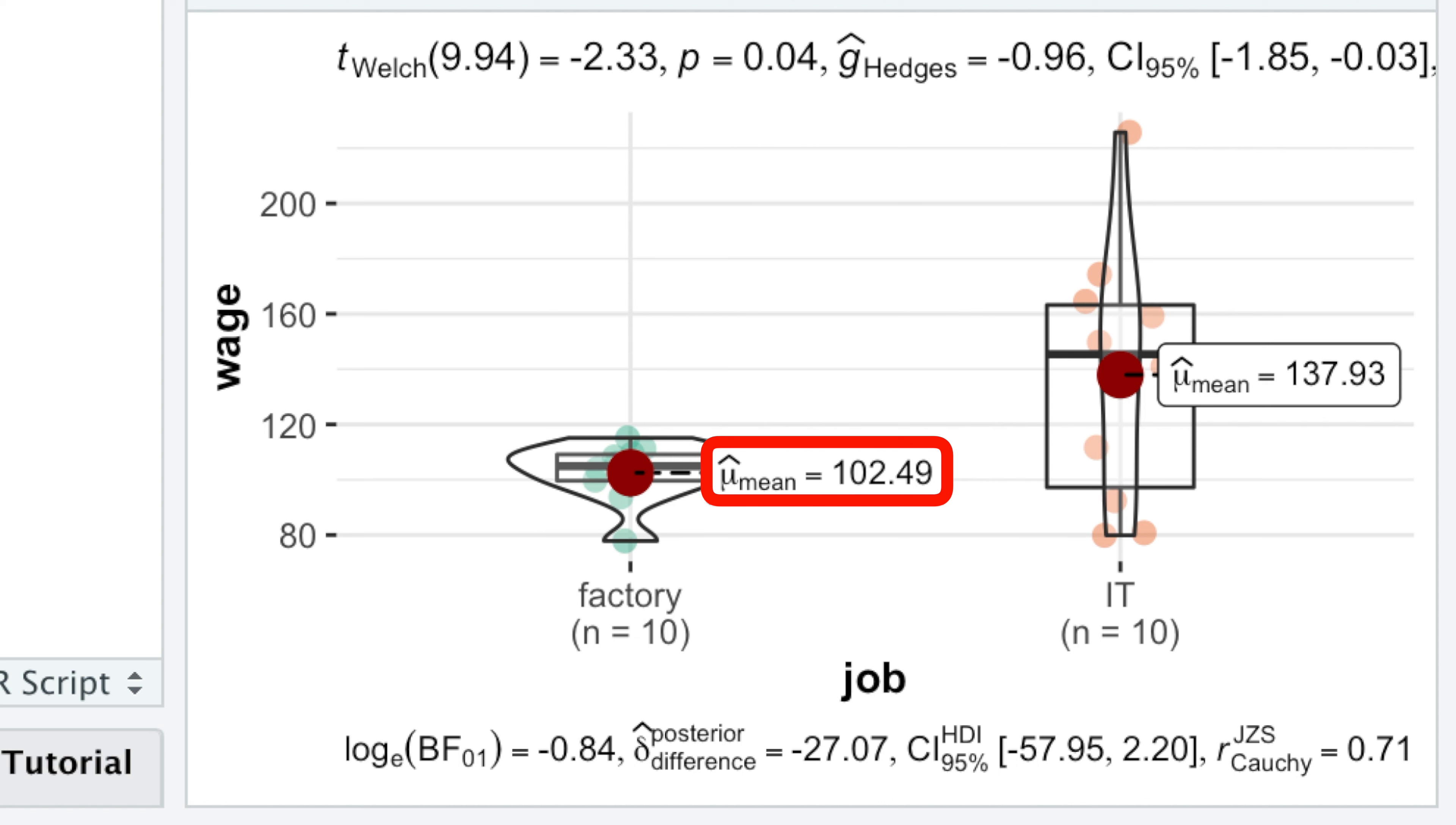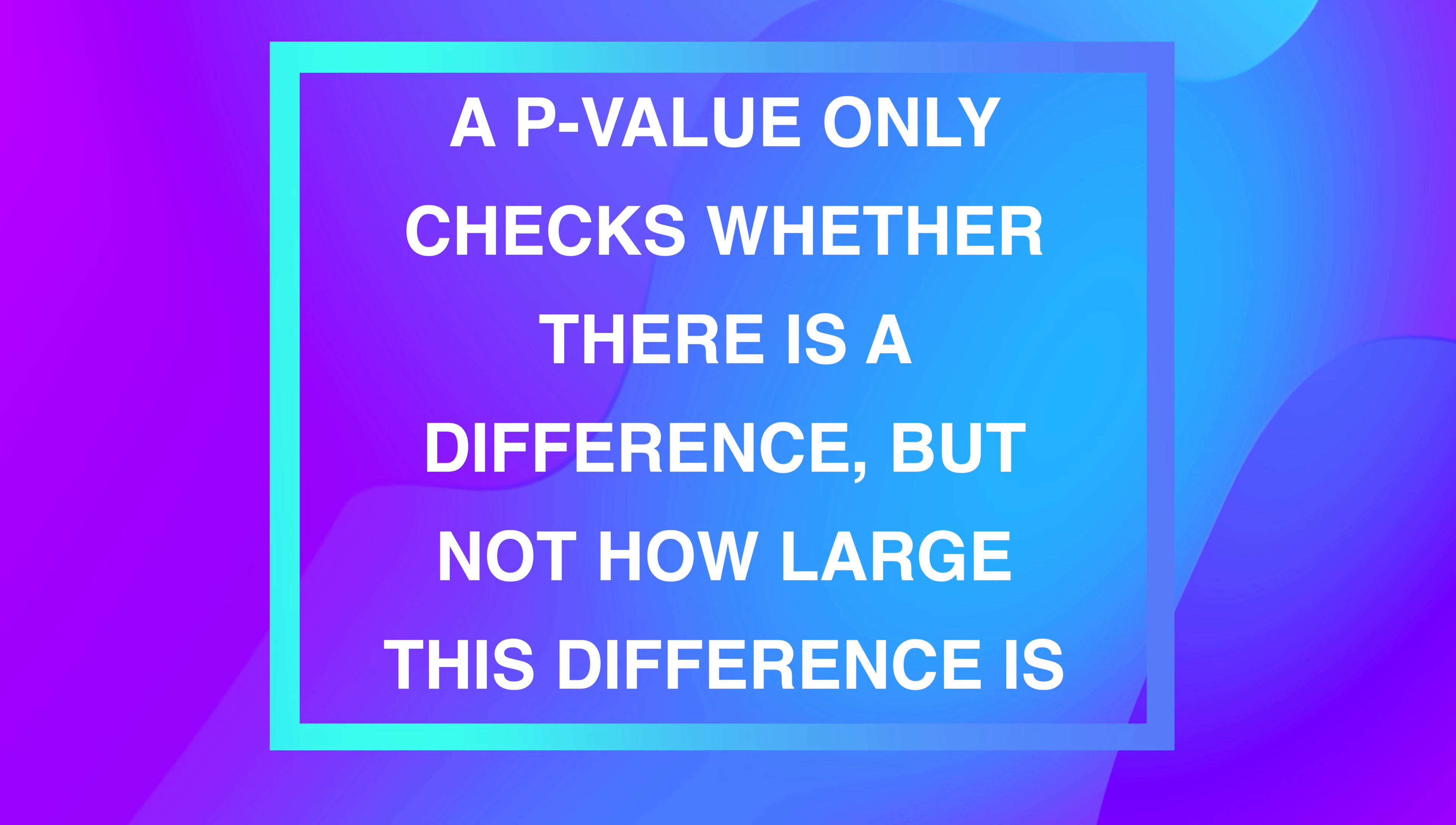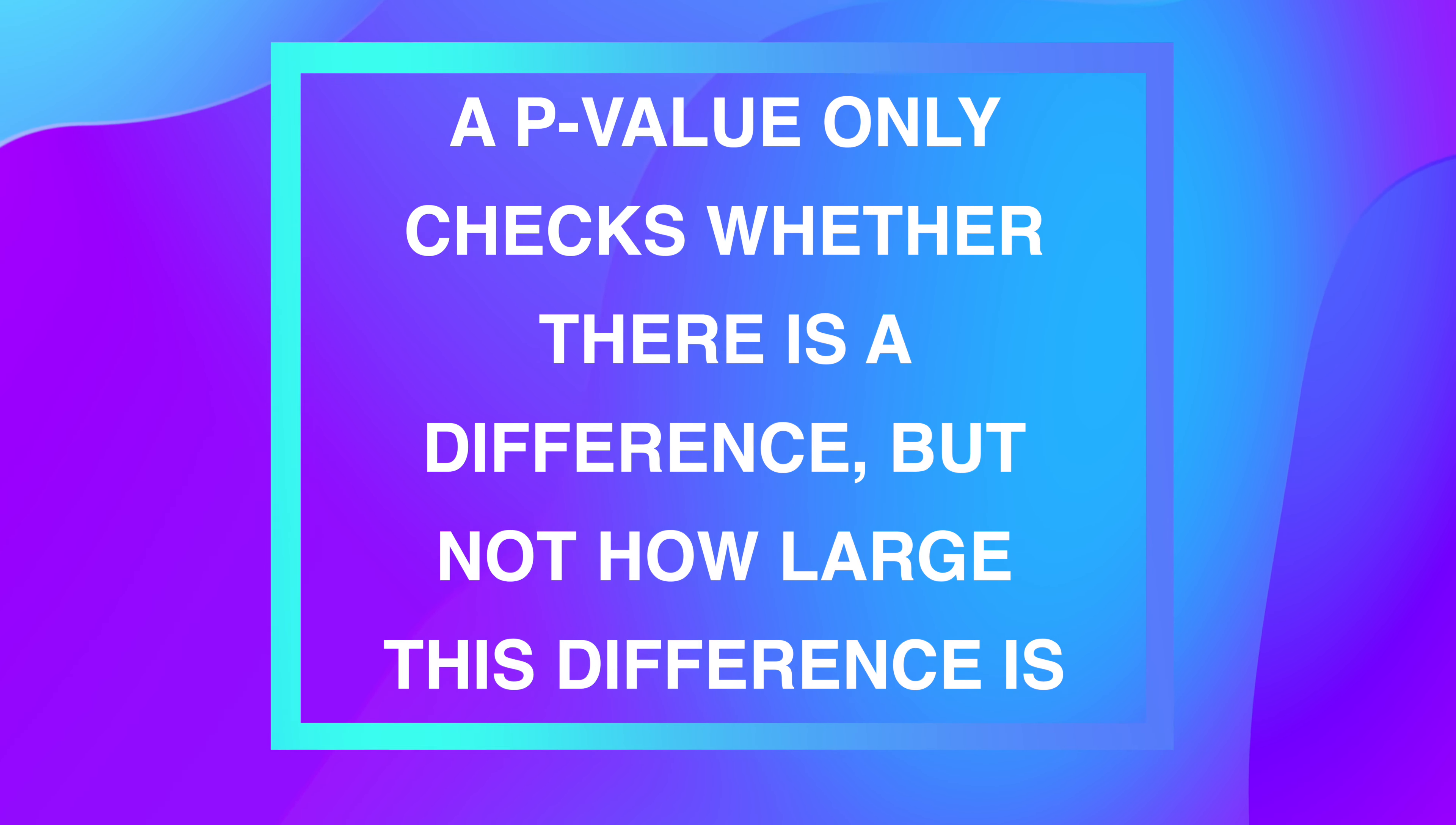But is a difference of $35,000 large? A p-value cannot tell that. A p-value only checks whether there is a difference, but not how large this difference is.